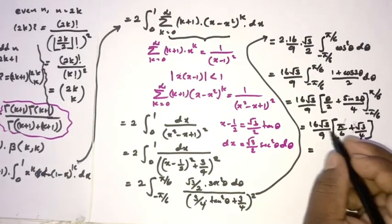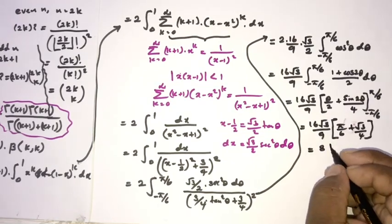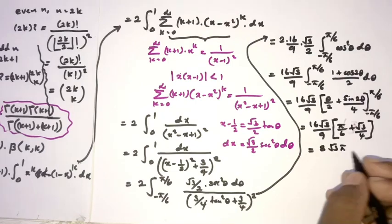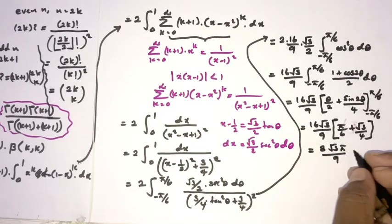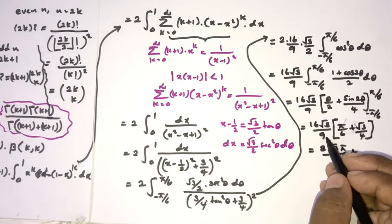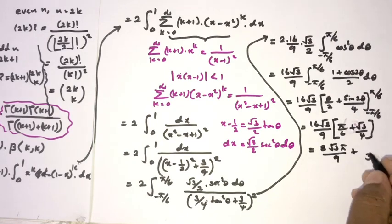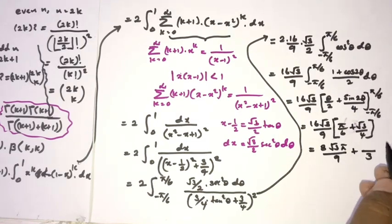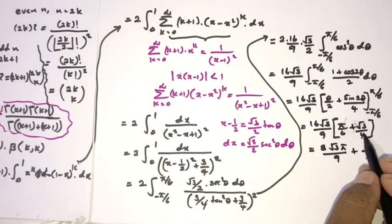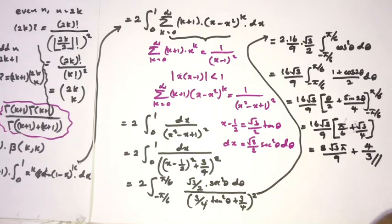Multiplying through, we obtain 8 sqrt(3) times pi over 9 plus, with sqrt(3) times sqrt(3) equaling 3 and the 3 cancelling with 9 to leave 3, and 4 times 16 giving the numerator, the final answer simplifies to 8 pi sqrt(3) over 9 plus 4/3. If you like this type of video, please subscribe to this channel. Thank you for watching.